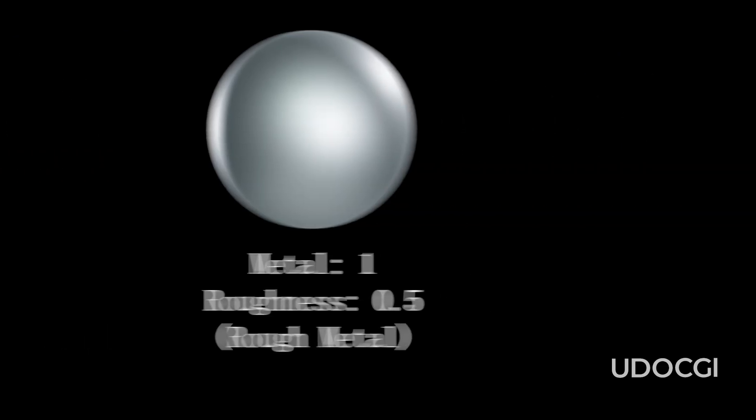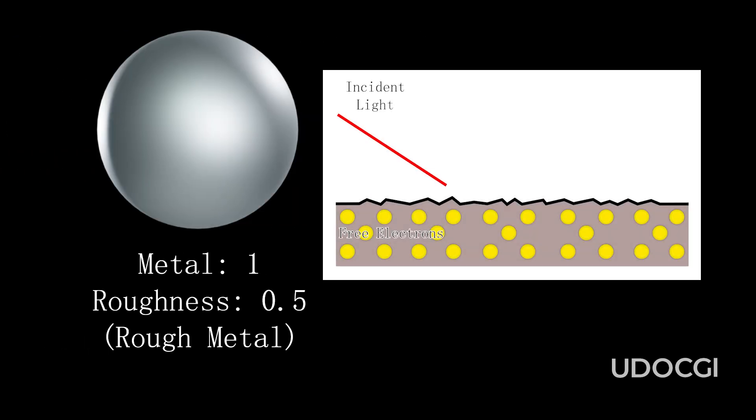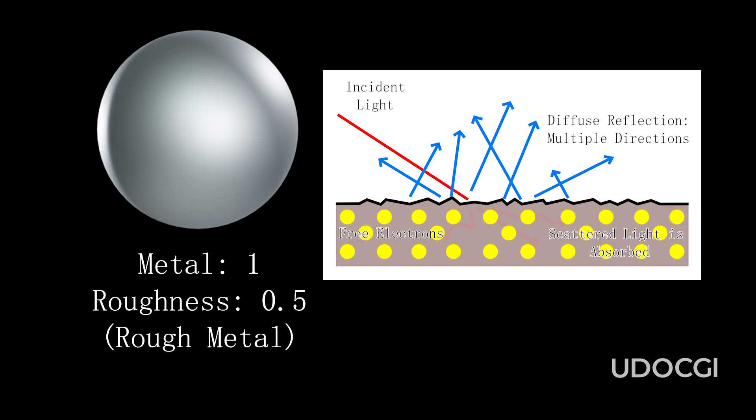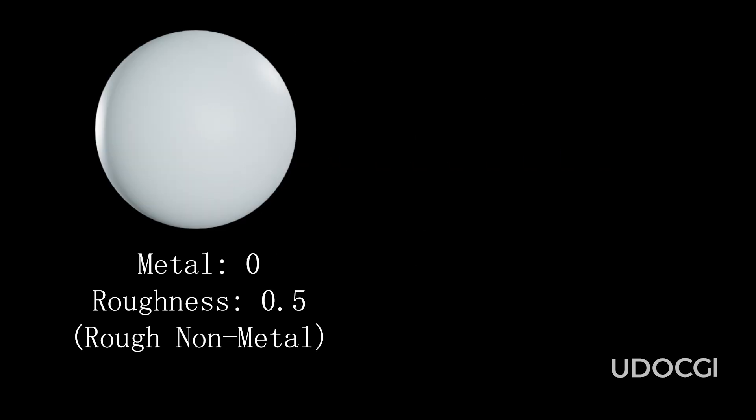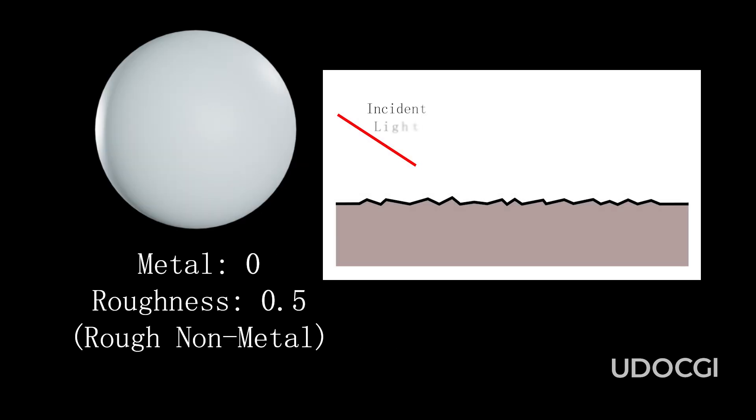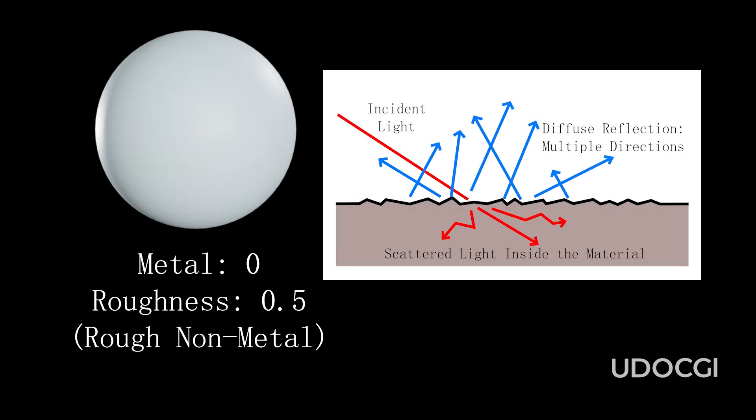This sphere is fully metallic with roughness set to 0.5, creating a blurry, scattered reflection. Although metals still absorb and reflect light, the rough or uneven surface causes reflections to be diffused and less clear. If we turn off the metallic but leave the roughness at 0.5, this sphere has a matte, diffused surface. Non-metals scatter light in many directions, resulting in a soft, non-reflective look with no sharp highlights.